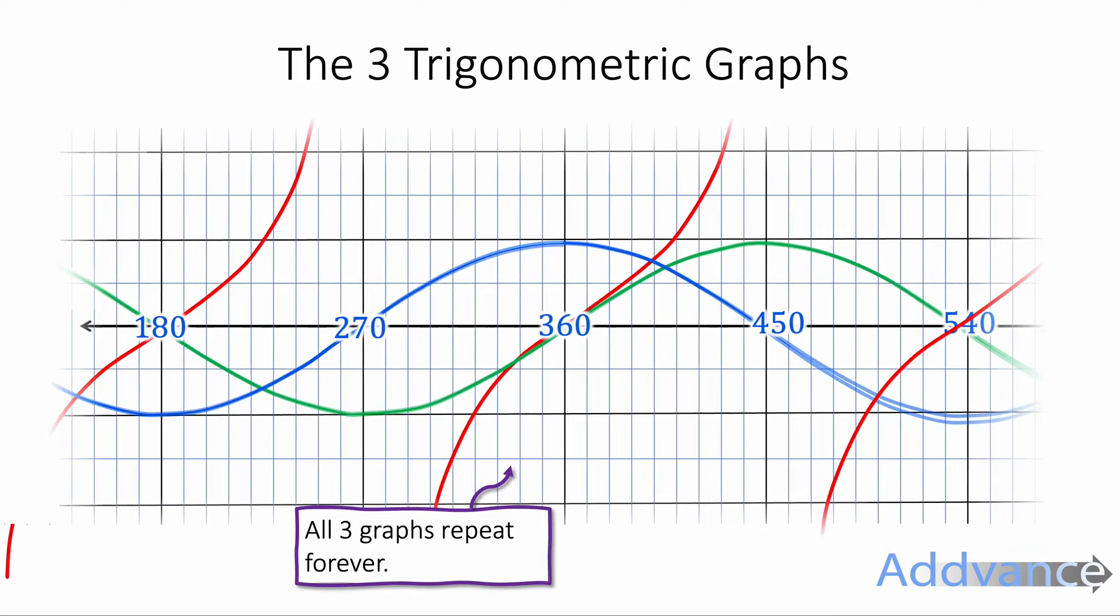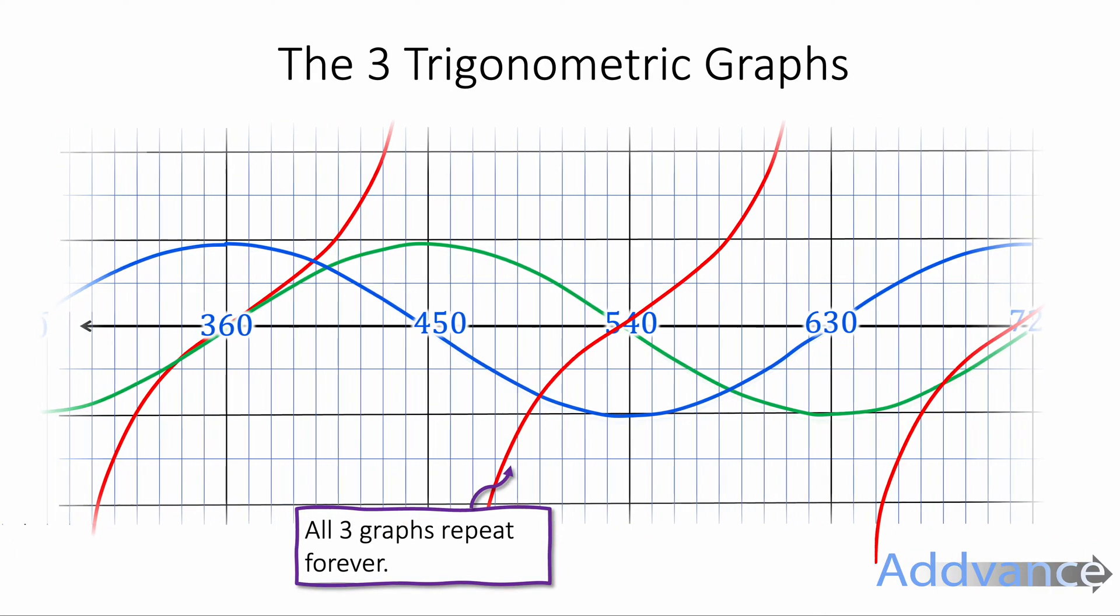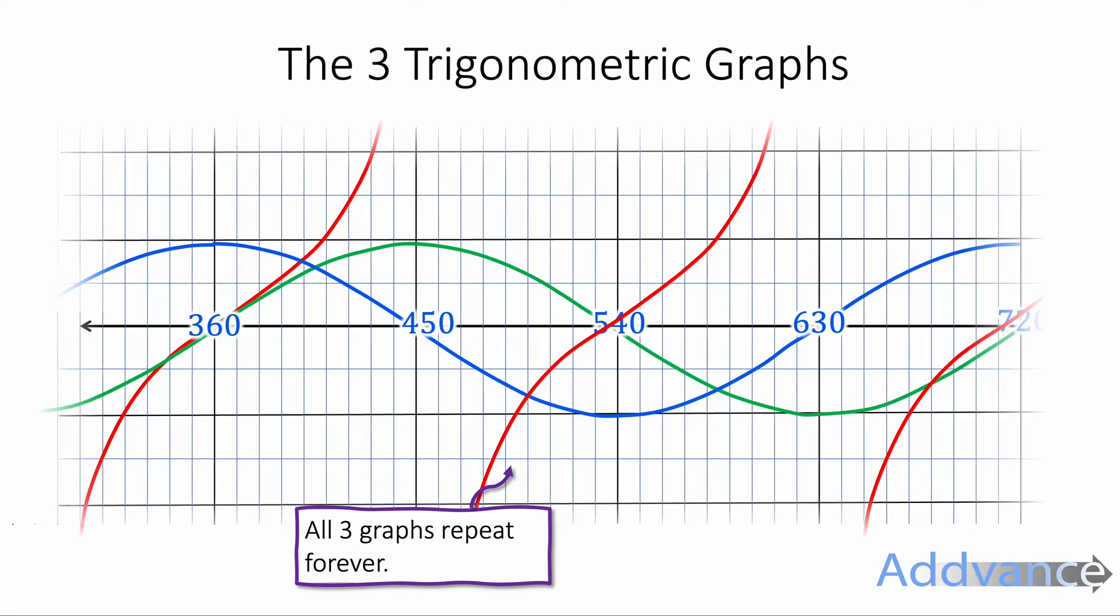All three graphs repeat forever, so they don't just stop at 360. They keep going forever and ever and ever, repeating in the same shape, in the same pattern. However, as I say, you only need to know up to 360 for GCSE.